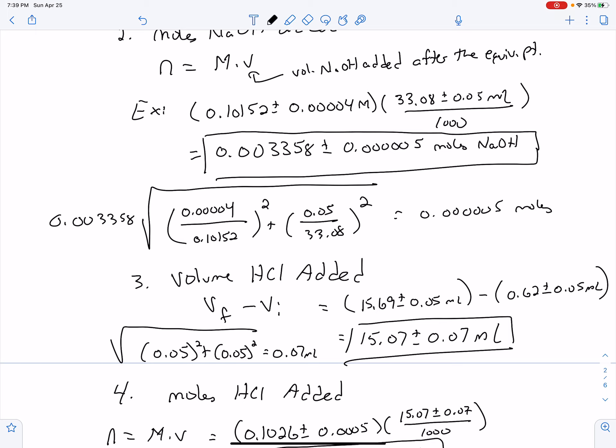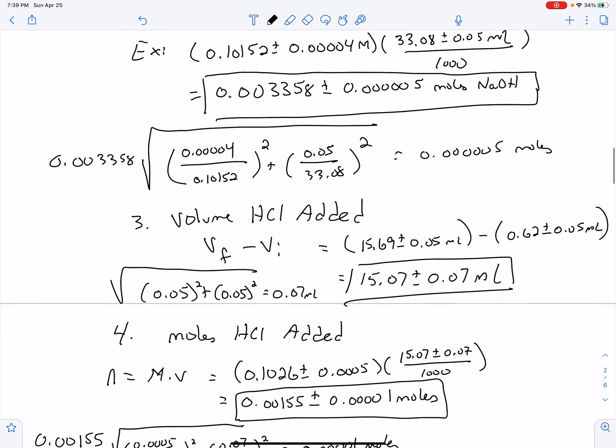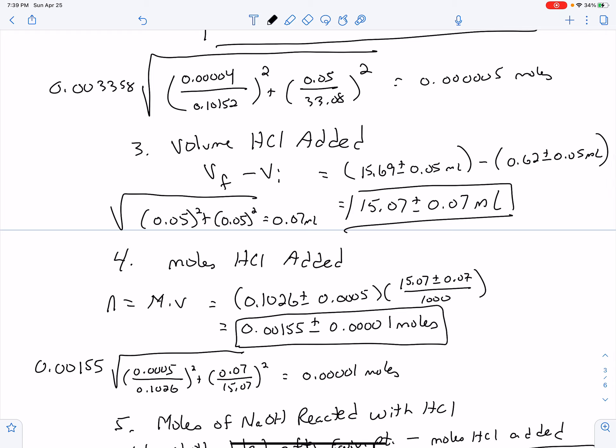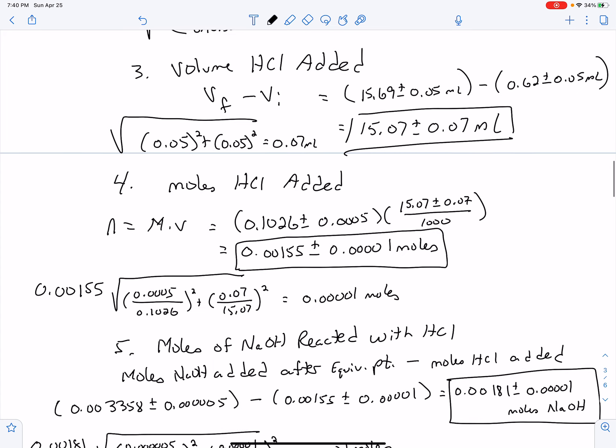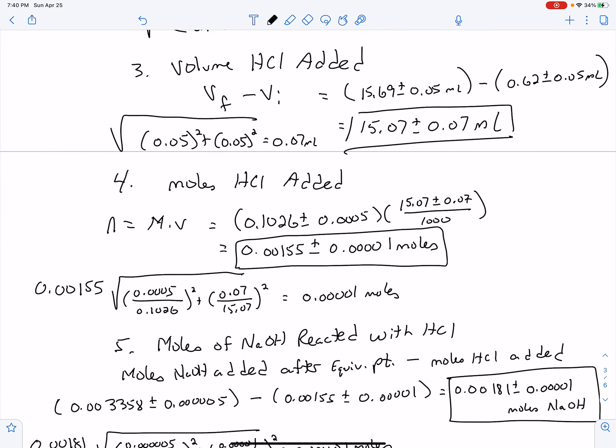Then I heated it, I let it cool, and I titrated it, back titrated it with HCl. How much did I add? Volume final minus initial. You can see my numbers there: 15.69 plus or minus 0.05 minus 0.62 plus or minus 0.05. You can see I found the uncertainty of that and I found that volume titrated. I next found the moles the same way, M times V. My molarity of HCl was 0.1026 plus or minus 0.0005, and then multiplied that by the volume of HCl that was titrated. You can see my calculations to find the moles of HCl added to react with the NaOH that did not react when heated. So this is looking at how much excess NaOH there was.